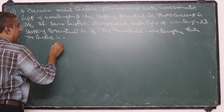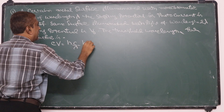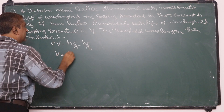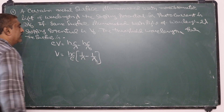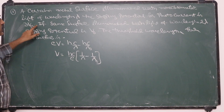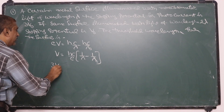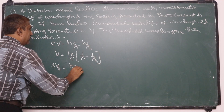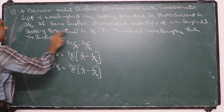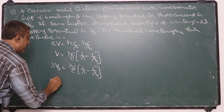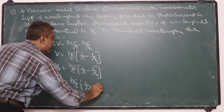From Einstein's equation, eV = hν = hc/λ - hc/λ₀, so we can write V = (hc/e)(1/λ - 1/λ₀). For the first case, 3V₀ = (hc/e)(1/λ - 1/λ₀). For the second case, V₀ = (hc/e)(1/2λ - 1/λ₀).